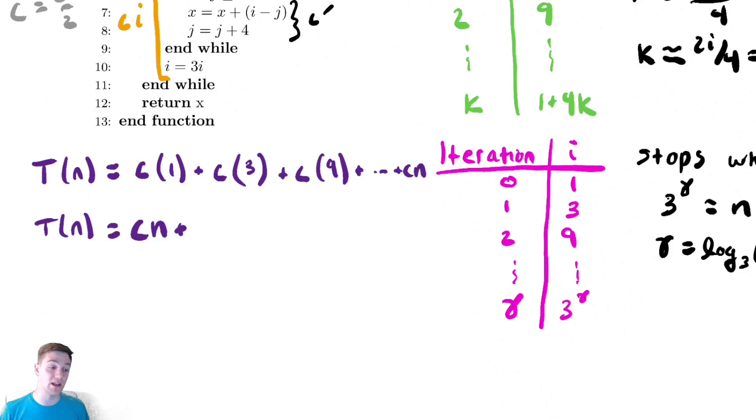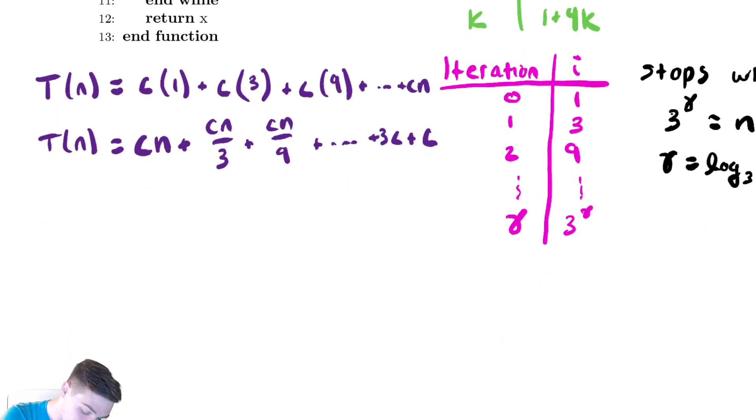So I'm going to write this as cn plus what is the term that comes immediately before cn? We are updating the value of i by multiplying by 3, and therefore to look at the previous term, we would need to divide by 3. So this is cn over 3 plus cn over 9, plus all the way down until 3c and then c. I'm going to factor out the largest value that appears in that summation. I'm left with 1 plus a third plus a ninth plus all the way down until 1 over n for the last term. By factoring out cn out of c, I'm left with 1 over n.